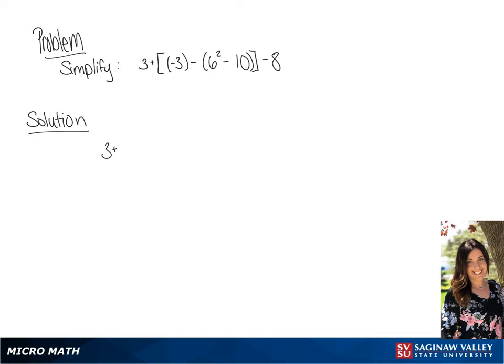We are going to simplify our problem given using order of operations. The first thing we're going to do is address the numbers in the parentheses, so we're going to simplify 6 squared minus 10 first. So we will have 36 minus 10.